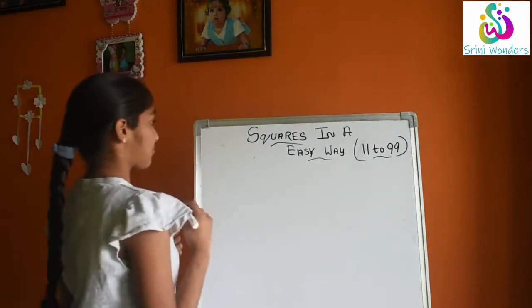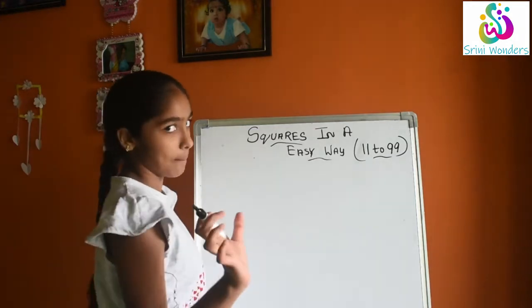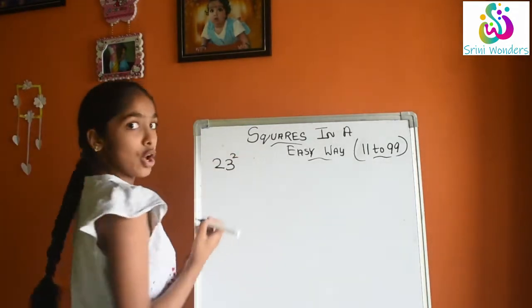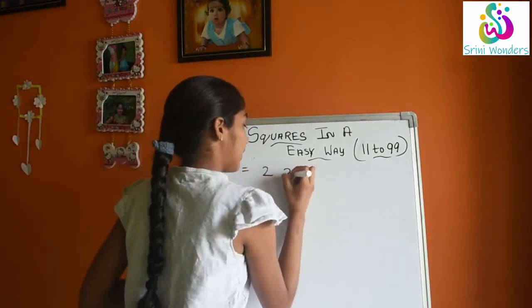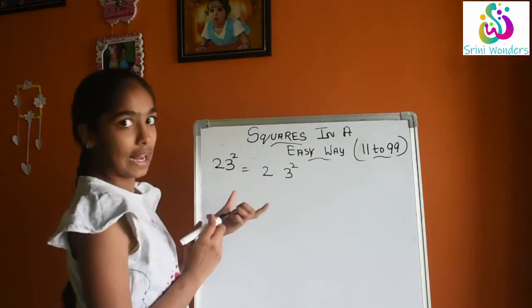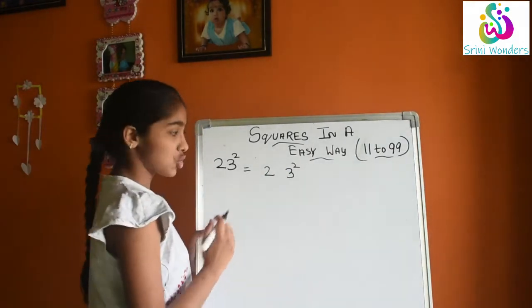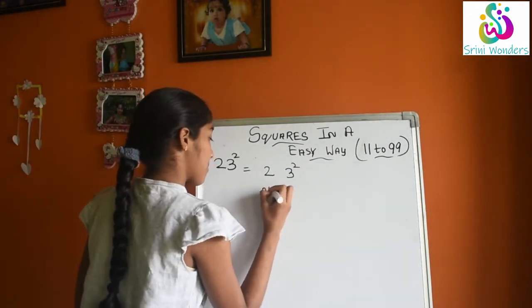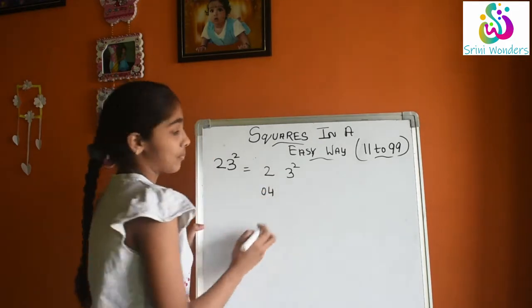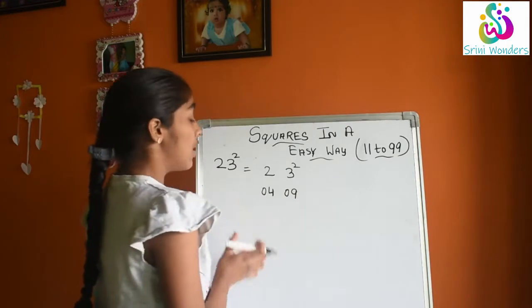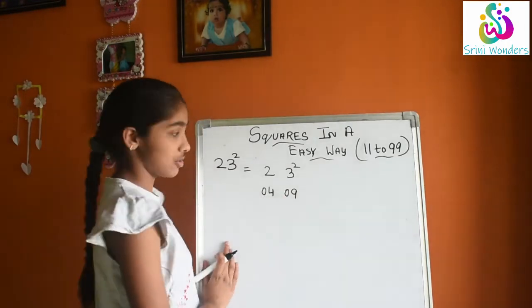Okay, so first I will take one example. That is 23 square. Now I will tell how to do with the trick. Now 2 square, what is 2 square? 04. Now 3 square? 09. So we should include zeros also.